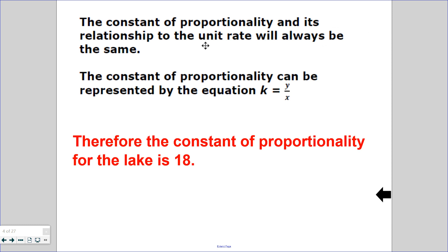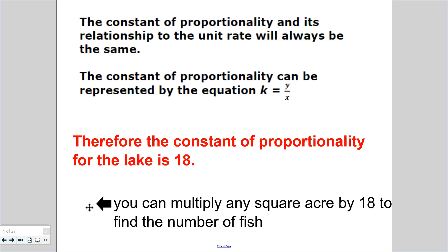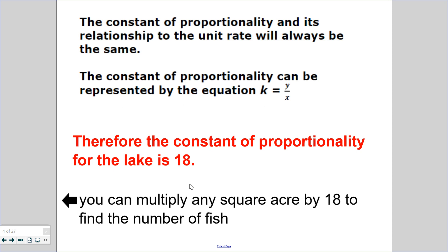So that leads us to a conversation of what is constant of proportionality. Constant of proportionality is the same as unit rate. The constant of proportionality can be found represented by the equation k equals y divided by x. That is why we divided the bass by the acres to find 18. Therefore, the constant of proportionality for the lake is 18. This means there are 18 fish or bass per square acre. That means you can multiply any square acre by 18 to find the number of fish. So for example, if the lake had 100 square acres, if I multiply by 18, that means there will be 1,800 bass fish.